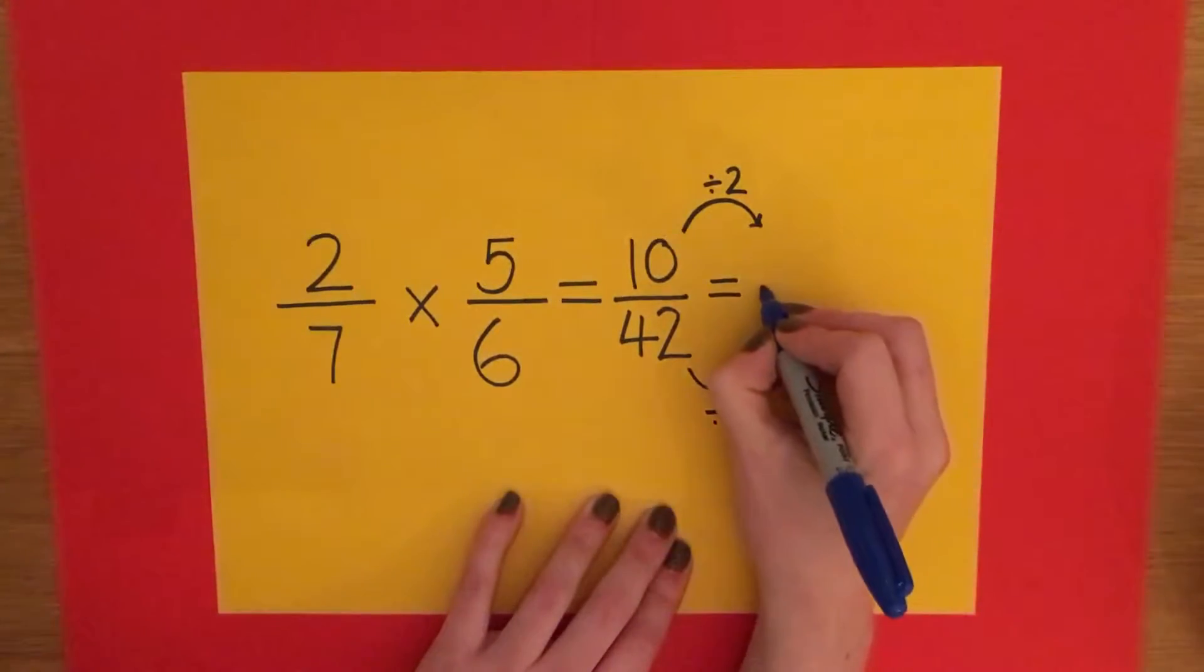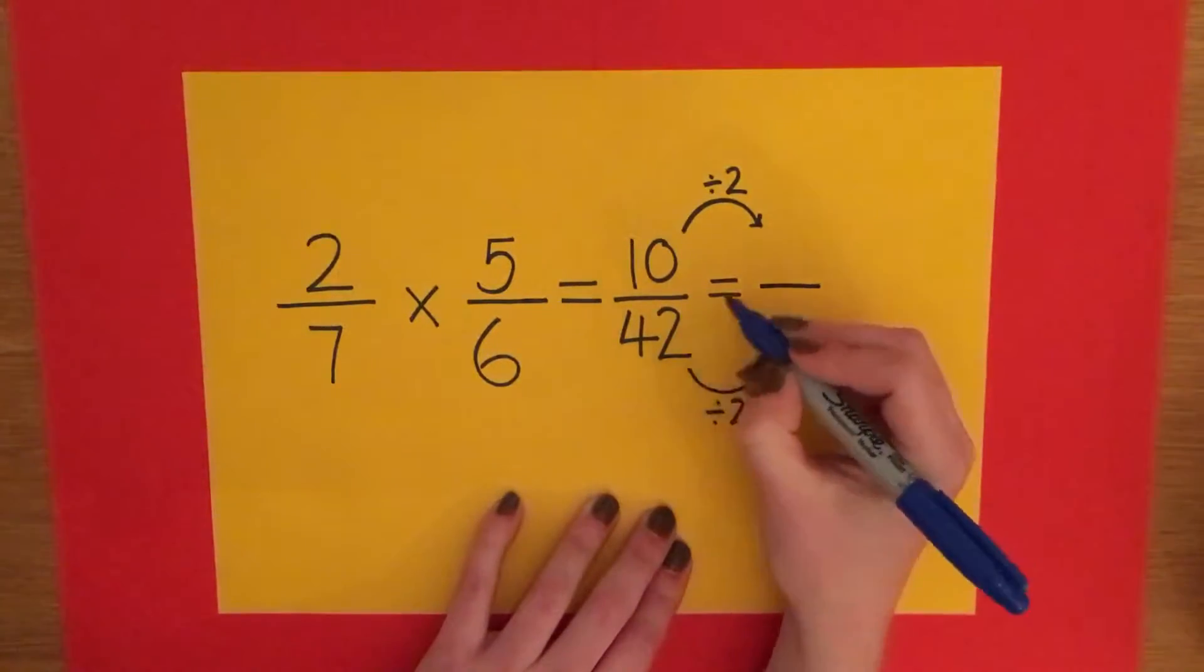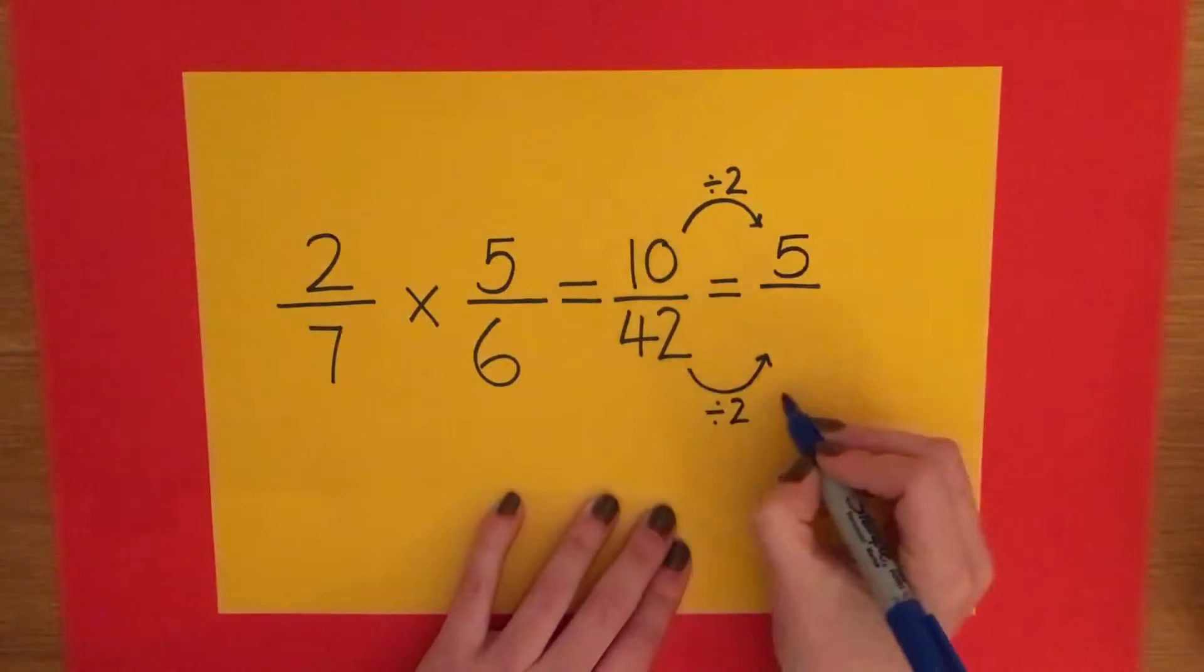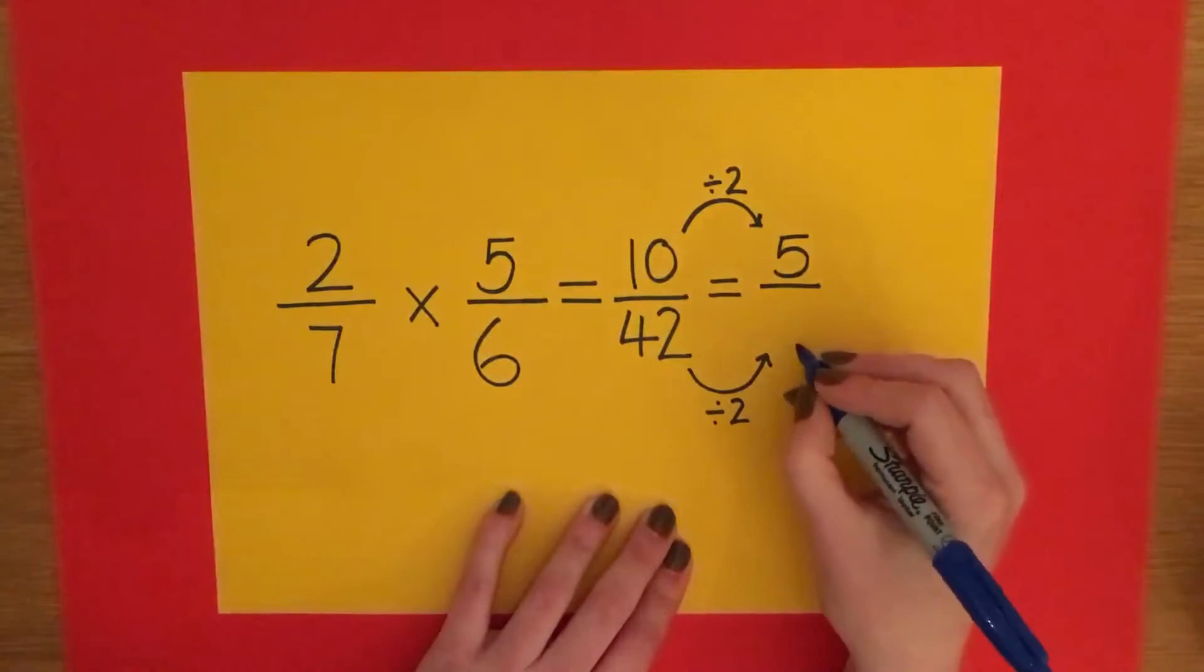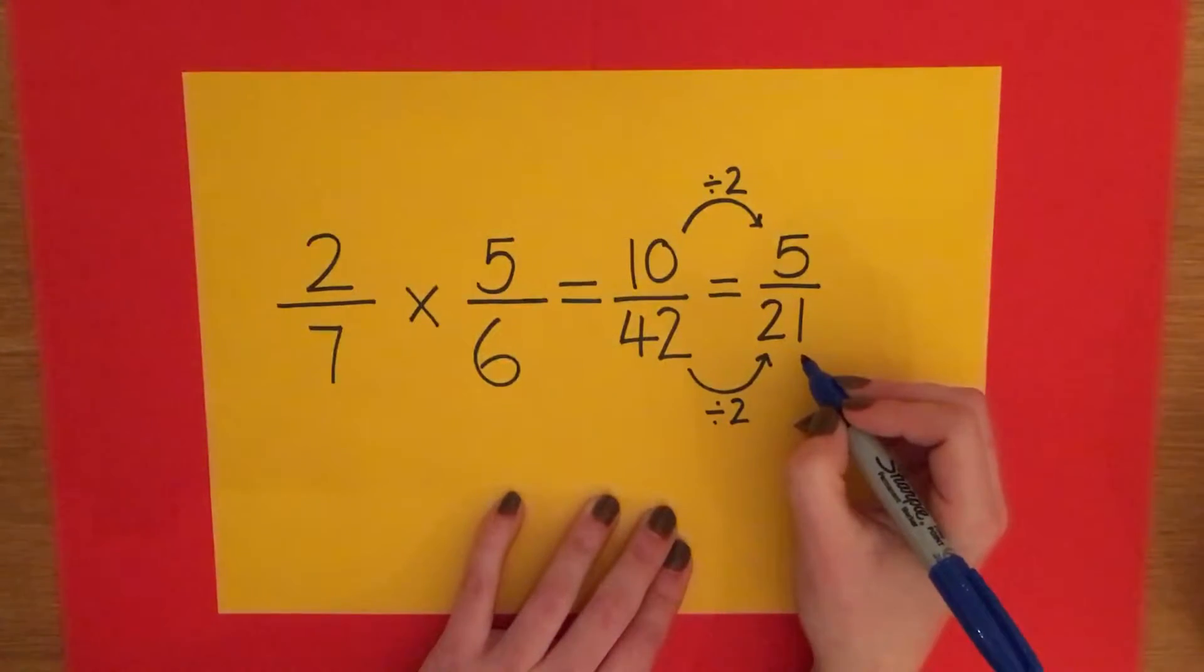So, I can simplify 10/42. 10 divided by 2 is 5. And 42 halved, or divided by 2, is 21. And that would be my answer, as it cannot be simplified any more.